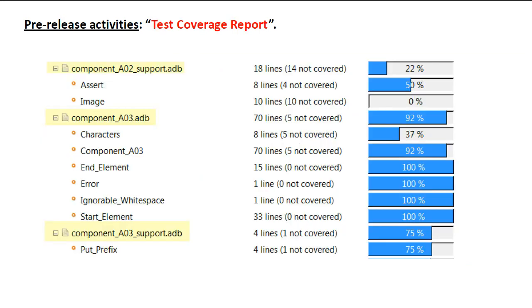Test Coverage Report: we need to ensure that all source code associated with a given component is completely covered by regression tests before it can be released. For that purpose, the development environment provides a tool called GANAT Coverage. What we have here is a coverage report after running component AO3 in the prototype. As you can see, code coverage is not complete. In a real project, this situation would not be acceptable since uncovered code is untested code, which is assumed to be defective until proven otherwise.